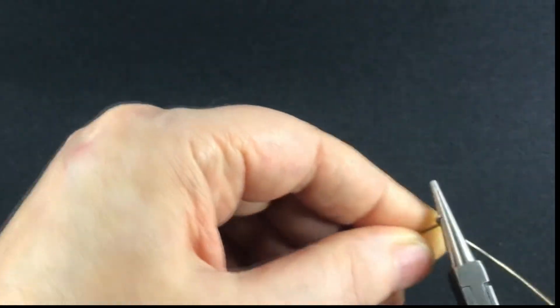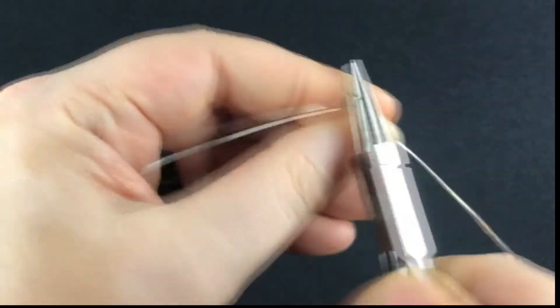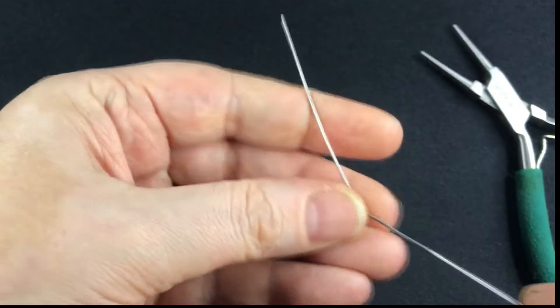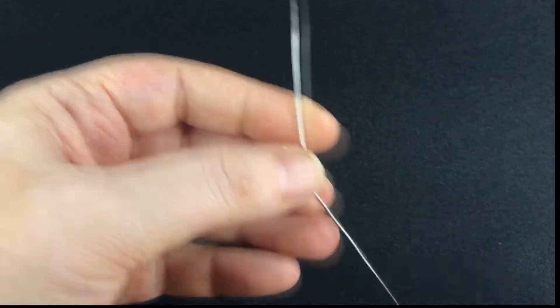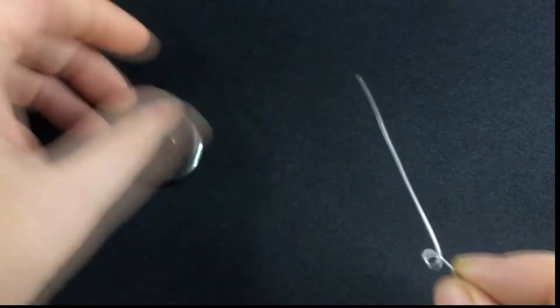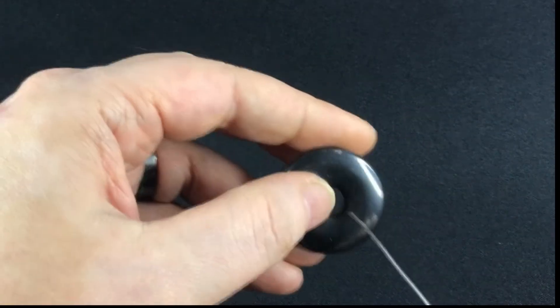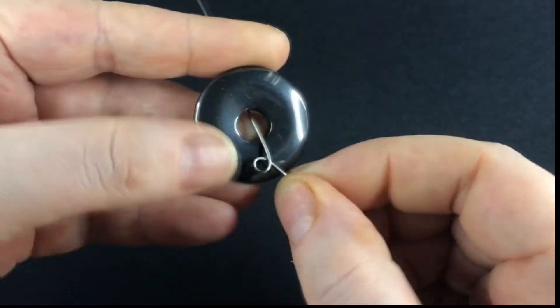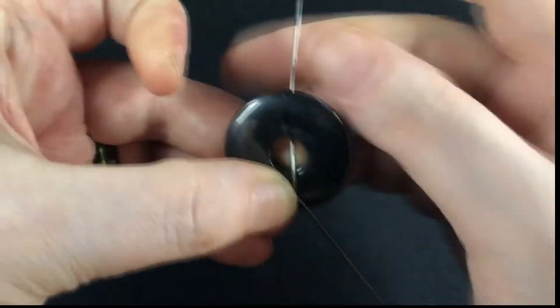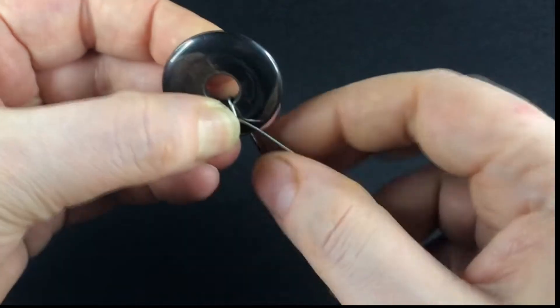It's the same concept as the previous donut episode, but it's tighter to the stone and the Viking knit is meant to make a decorative blade-like part going down the edge of the donut.